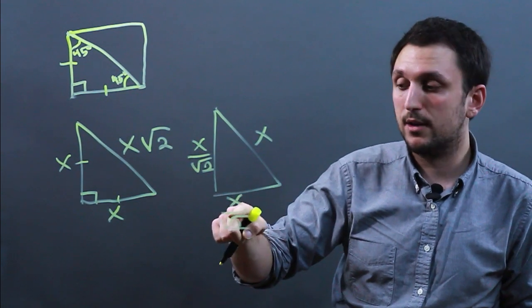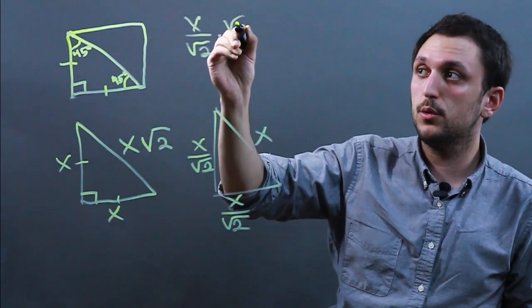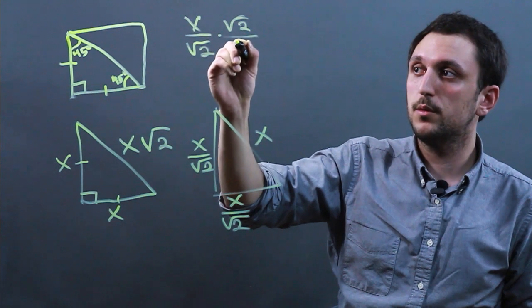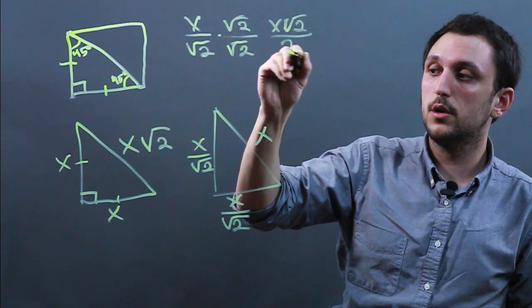If you need to rationalize the number, then we say x over root 2 times root 2 over root 2, and we get x root 2 over 2.